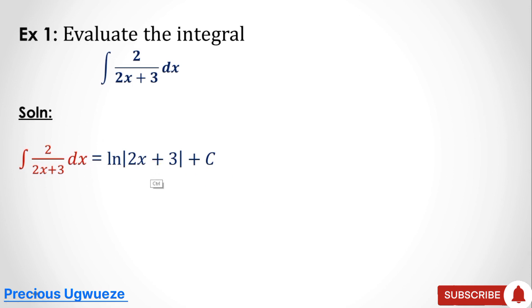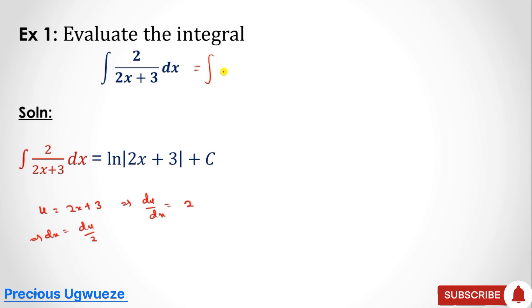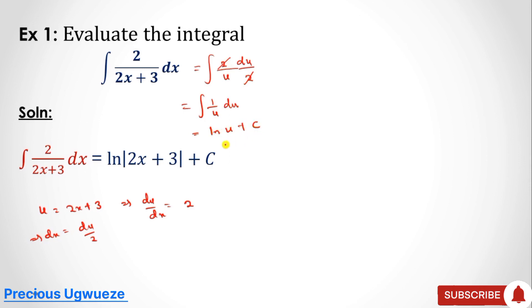You can also use u-substitution to verify. Let u = 2x + 3, then du/dx = 2, so dx = du/2. Substituting, we get the integral of 2/u · (du/2). The 2s cancel, leaving the integral of 1/u du, which equals ln|u| + C. Bringing back u = 2x + 3 gives the same solution as before.